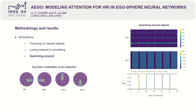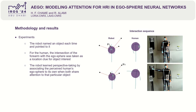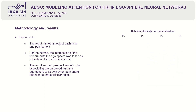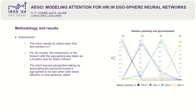This latter scenario is illustrated in the plot at the right, showing the evolution of the activation state of layers. We also conducted an experiment where the robot taught the human objects by naming and pointing to them. For the human, the intersection of the forearm with the egosphere was taken as a location clue for object interest. The robot learned perspective taking by associating the human's egosphere to its own when both share attention to that particular object.